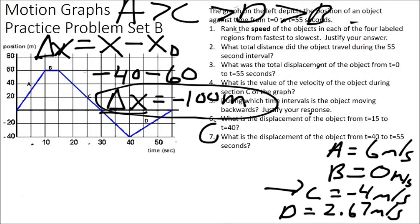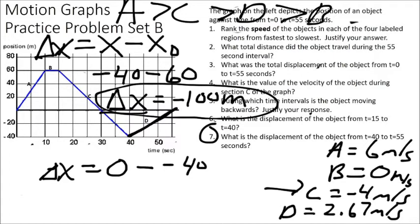Question seven: displacement from t equals 40 to t equals 55. Notice a positive slope — moving forward with a positive velocity. At t equals 40, position is negative 40; at t equals 55, position is zero. Final position (0) minus initial position (negative 40): zero minus negative 40 gives a delta X of positive 40 meters between t equals 40 and t equals 55 seconds.